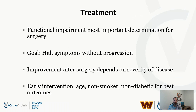The goal of surgery is to halt the symptoms without progression. We do know that approximately 30 to 40 percent of patients with surgical intervention will get resolution and some improvement after surgery. That depends on the severity of the compression on the spinal cord. Some factors that lead to a better outcome would be early surgical intervention, younger age, patients that are non-smokers, and patients that are not diabetic.